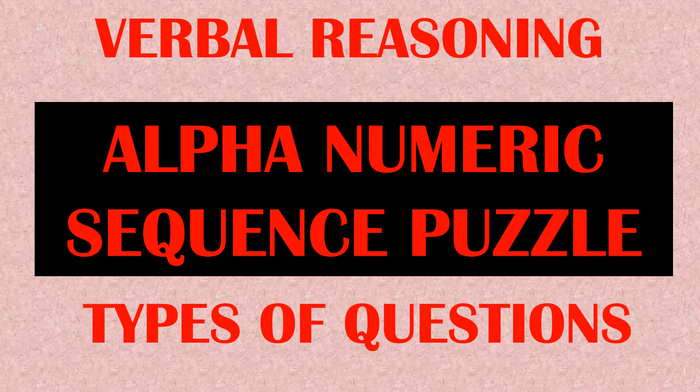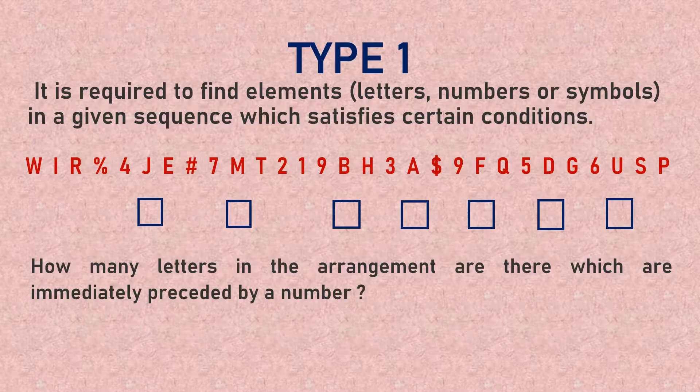There are five different types of questions that can be framed on a given sequence of alphanumeric series. Basically, when we say 'alpha' it means alphabet. As you can see on the screen, there is a series here and I'll be using a pointer to highlight it.